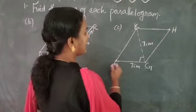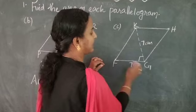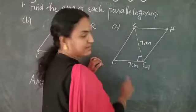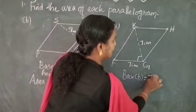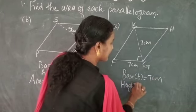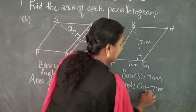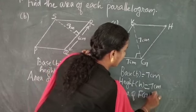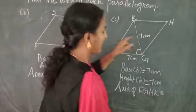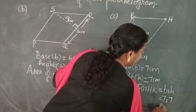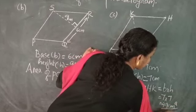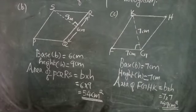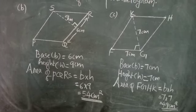Option C: Area of parallelogram FGHK. We have to find the area. Given: base is 7 cm and the perpendicular height is also 7 cm. So B equals 7 cm and H equals 7 cm. Area of FGHK equals base into height, which is 7 into 7, equals 49 cm².